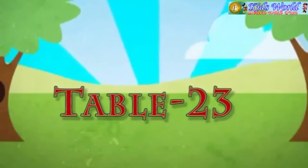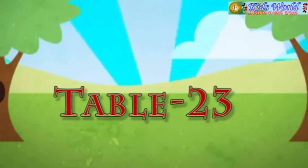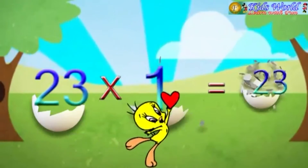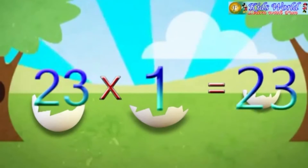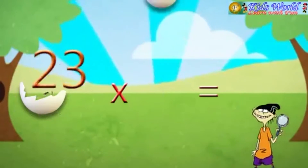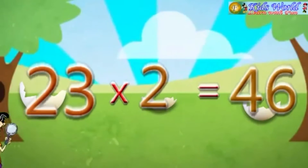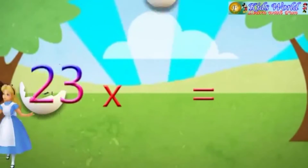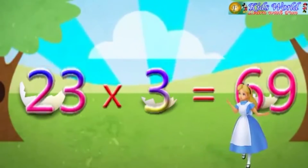Table 23. 23 into 1 is equal to 23. 23 into 2 is equal to 46. 23 into 3 is equal to 69.